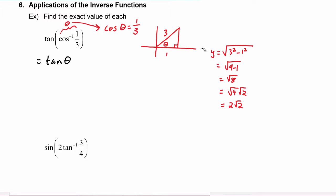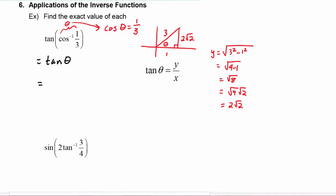Now let's take that and put it on our picture. So finding the tangent of the cosine inverse of one-third, we do this temporary substitution where we say let's just call this theta. Now using our picture we can find the tangent of theta very easily. We know that would be the y value, which is two radical two, divided by the x value, which is one. So this is two radical two.